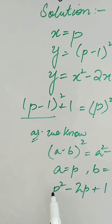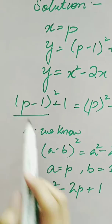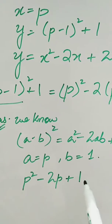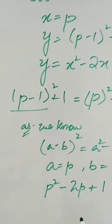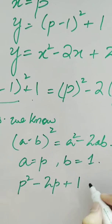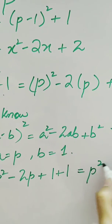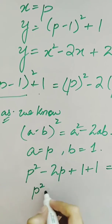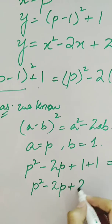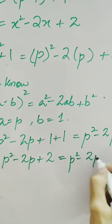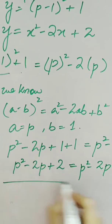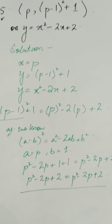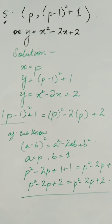As a = p, it becomes p². Then -2ab gives -2p, and b = 1, so 1² = 1. Adding the +1 from the given value, we have p² - 2p + 1 + 1 = p² - 2p + 2. Further solving: p² - 2p + 2 = p² - 2p + 2. These points are satisfying the equation, so we say that these points lie on the given line.